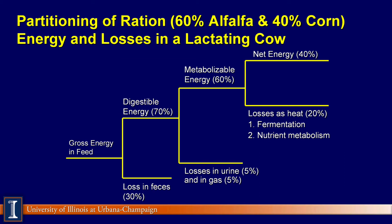Next, we go from digestible energy to something called metabolizable energy, which is very common in Europe for ration balancing, also with pigs and poultry. Metabolizable energy is about 60% of the total. We lose another 5% in urine energy losses and also 5% in gas losses — that is your methane, your greenhouse gas. That's why rumensin, the ionophore, will lower that number and why rumensin makes feed higher-valued for dairy cattle as we reduce that loss.